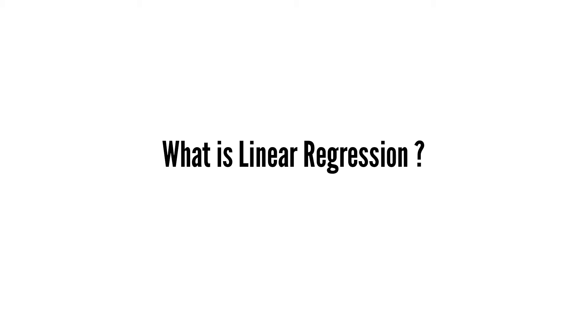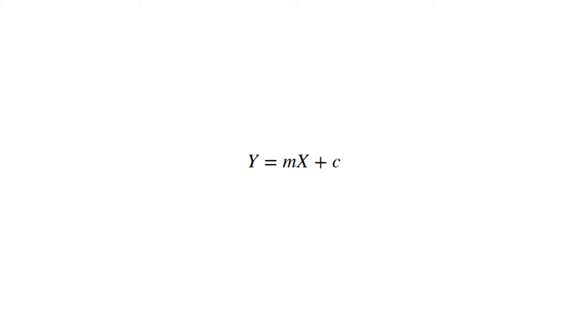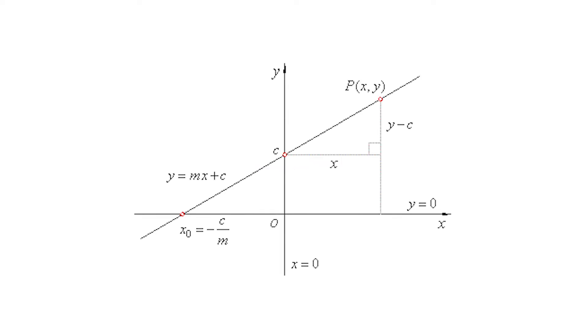So what is linear regression? In statistics, linear regression is a linear approach to modeling the relationship between a dependent variable and one or more independent variables. Let x be the independent variable and let y be the dependent variable. We'll define a linear relationship between these two variables using the equation y = mx + c — the same equation of a line from high school, where m is the slope and c is the y-intercept.